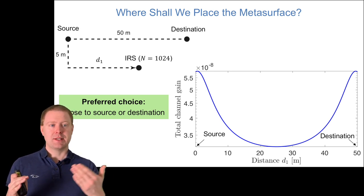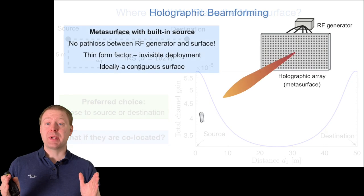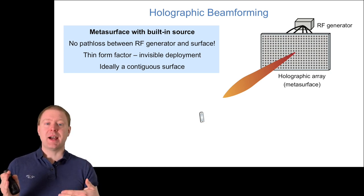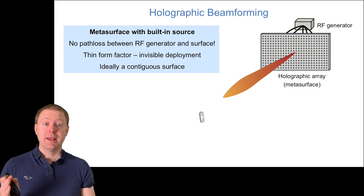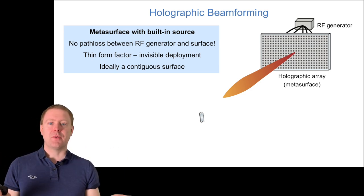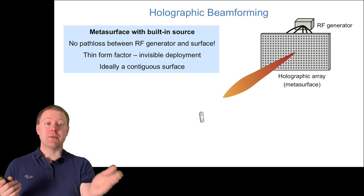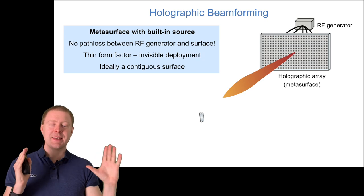What if they are co-located—the base station and IRS? That's holographic beamforming. You have an RF generator at the back side of the IRS, connected so the signal goes directly into the surface without losses. The surface contains meta atoms that phase shift in a way similar to a phased array but built entirely differently. You get a thin form factor, almost invisible deployment. The idea is an almost contiguous surface with elements that phase shift to send beams in different directions—one embodiment of intelligent reflecting surface where reflection happens inside the surface itself.